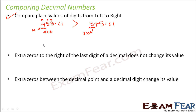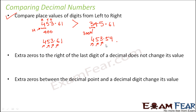Let us take more examples. Let's say we look at 453.61 and 453.59. Starting from the leftmost digits: 4 and 4 — both are same; 5 and 5 — both are same; 3 and 3 — both are same. Then we come to 6 and 5 — they are not the same. 6 is bigger than 5, so 453.61 is bigger than 453.59. So basically you compare digit by digit and then decide which one is bigger.